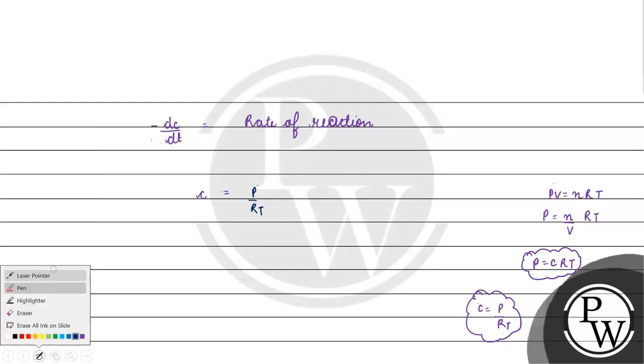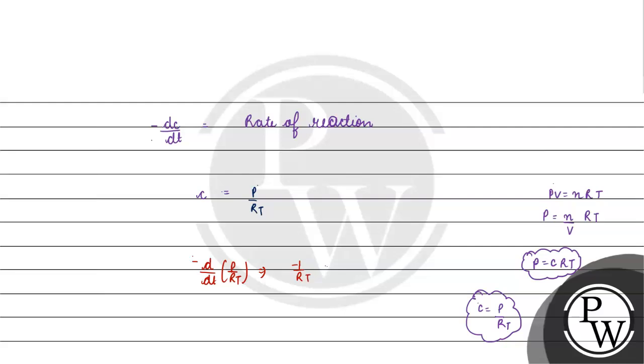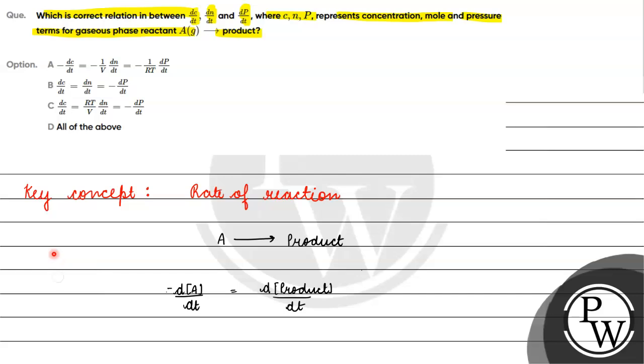Now this value we will put in this equation. So we have minus d/dt of P/RT. So we have minus 1 upon RT, because these two are constant, dP/dt. So we have minus 1 by RT into dP/dt. Now we have minus dC/dt is basically equal to minus 1 upon RT into dP/dt. This is correct.